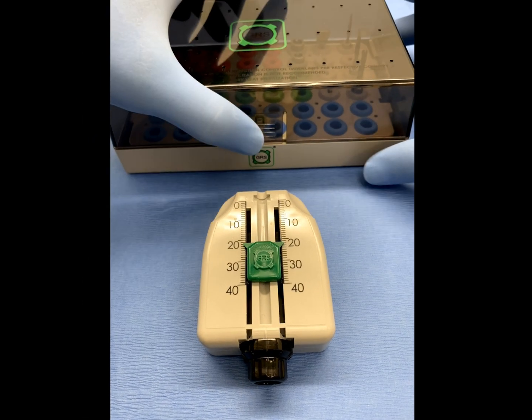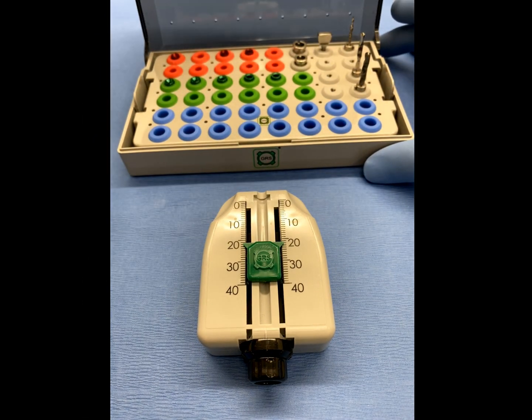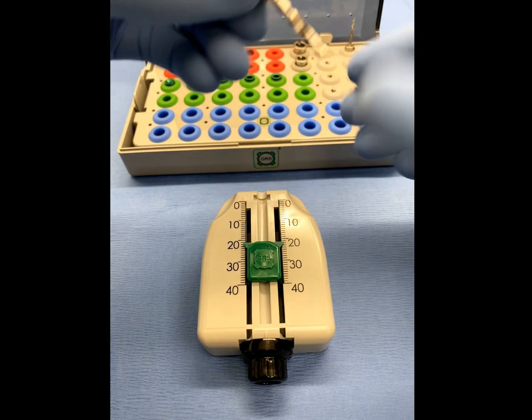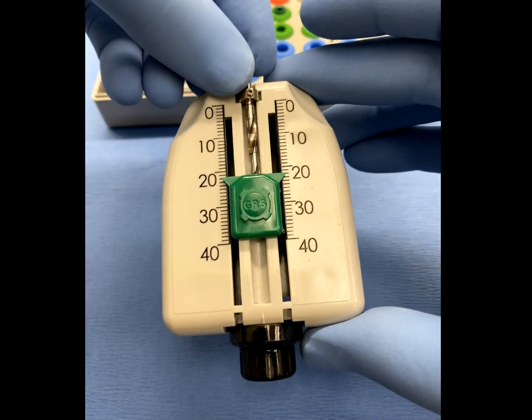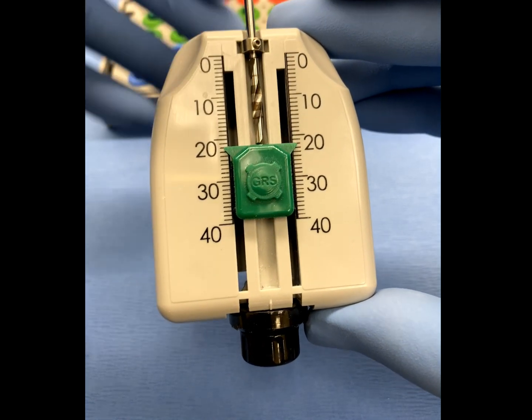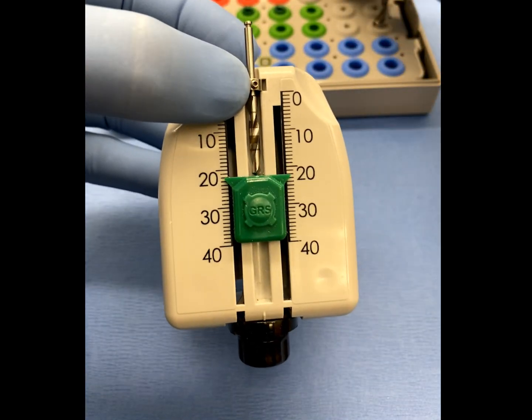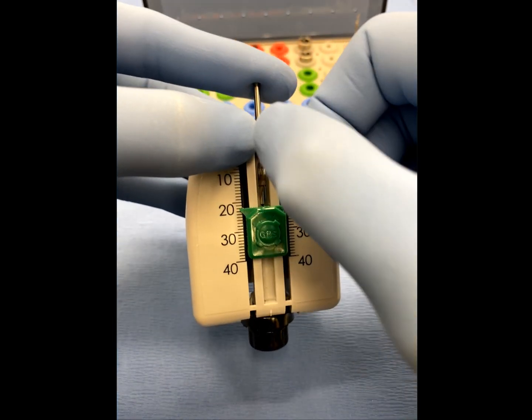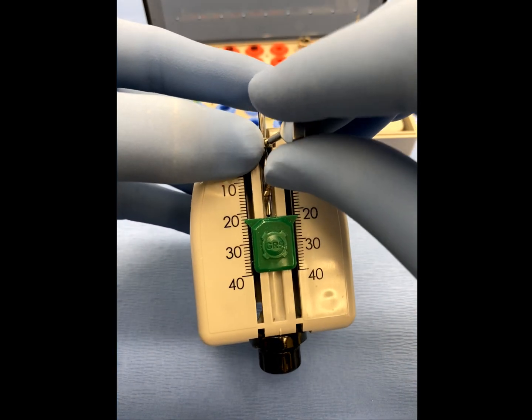The resulting measurement found on the upper shell of the depth gauge is accurate to 0.1mm and represents the exact position to affix this and all subsequent drill stops on the remaining drills of a surgical sequence in order to precisely replicate the desired osteotomy.